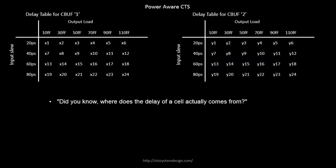Now we have the delay values, and the first question to ask is: where does the delay of a cell actually come from? We know they come from the delay table, but where does this table actually come from? What is the source of this table? These are not just arbitrary numbers - there has been some characterization done to obtain these numbers. Why are the two tables different? That will be answered from a circuit design point of view, and where these delays come from will be answered from a SPICE simulation point of view.